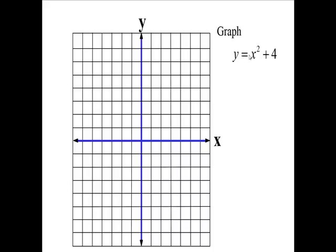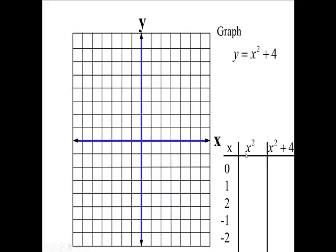Graph y equals x squared plus four. Okay, this is x, x squared, and then we're going to have x squared plus four. We're going to substitute these numbers in for x. Now if you square zero you get zero, then if you add four you get four, so we have a point zero four.